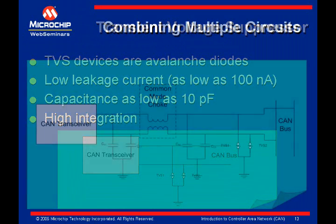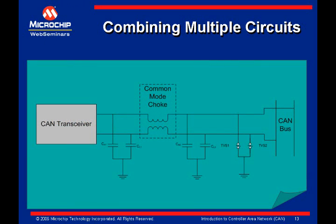The best solution for filtering noise and protecting CAN nodes may be to combine the circuits. This slide shows one possible example. The TVS is placed so that it not only protects the transceiver, but also protects the filter components from high energy transients. A couple of things to keep in mind when using protection circuits for CAN: place the components as close as possible to the connector, and place the connector as close to the edge of the PCB as possible. This will lessen the chance of noise spreading on the PCB before it can be filtered or clamped.